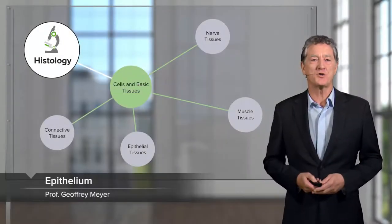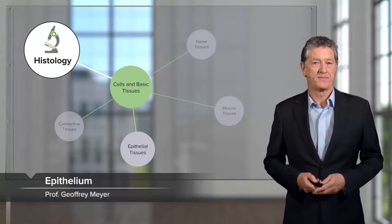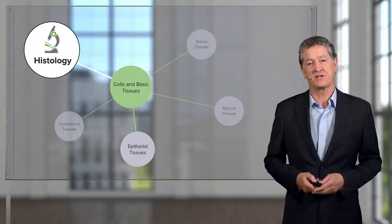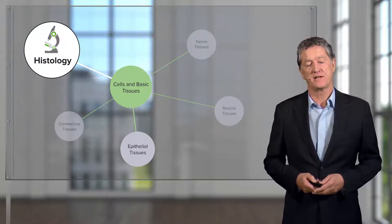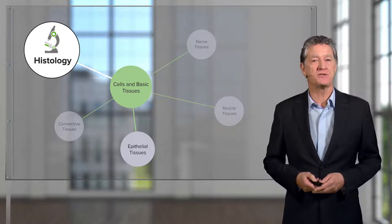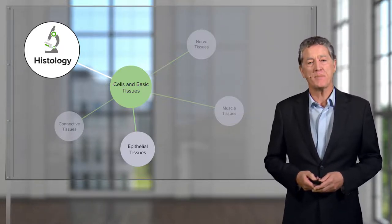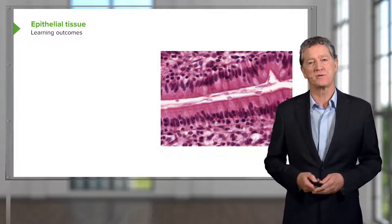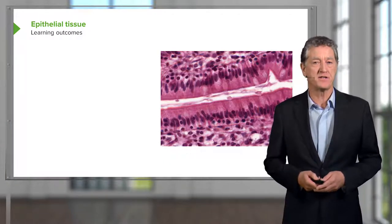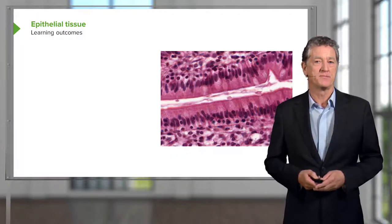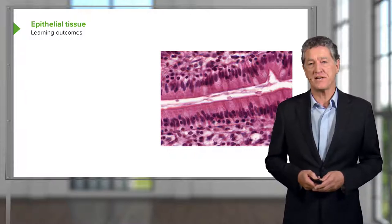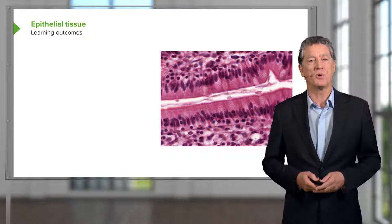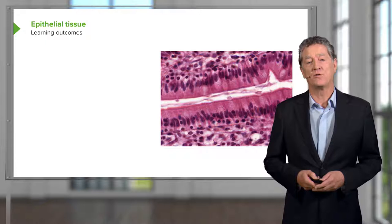In this lecture, I'm going to talk about epithelium. Epithelium is one of the four basic tissues of the body. The other three are connective tissues, muscle and nerve. Epithelium is very important to understand because it's located in most organs of the body. If you can identify the different sorts of epithelium and know their different functions, it's very easy to understand the structure of organs and identify them.